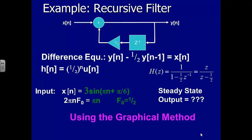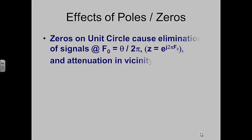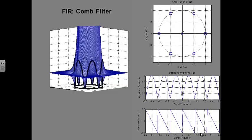More importantly, you can see how pole and zero locations in the Z-plane affect the shape of the frequency response. Putting a zero on the unit circle makes H of F go to zero at that frequency — a perfect null. Getting close to a zero still attenuates; the closer you get, the more attenuation. A classic comb filter equally spaces zeros around the unit circle — wherever you want a notch, put a zero at that frequency location.